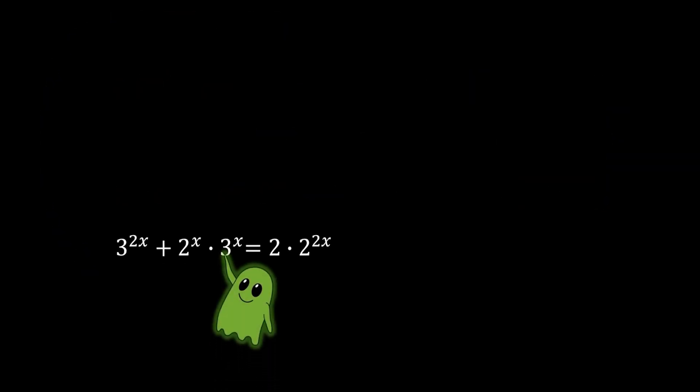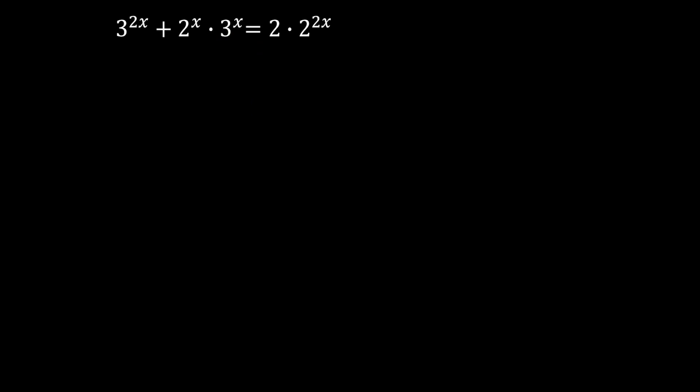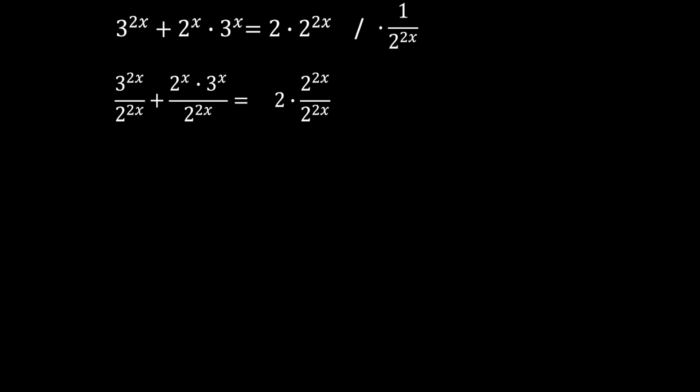Now we will use this new equation to simplify things even more. As you can see we have two different bases now — that's good — but still we do not have one single base. The secret here is to divide everything by the term with the biggest exponent, which can be 3 to the power of 2x or 2 to the power of 2x. For this example we will choose 2 to the power of 2x. After simplifying, we are left with 3 to the power of 2x over 2 to the power of 2x, plus 3 to the power of x over 2 to the power of x, equals 2.